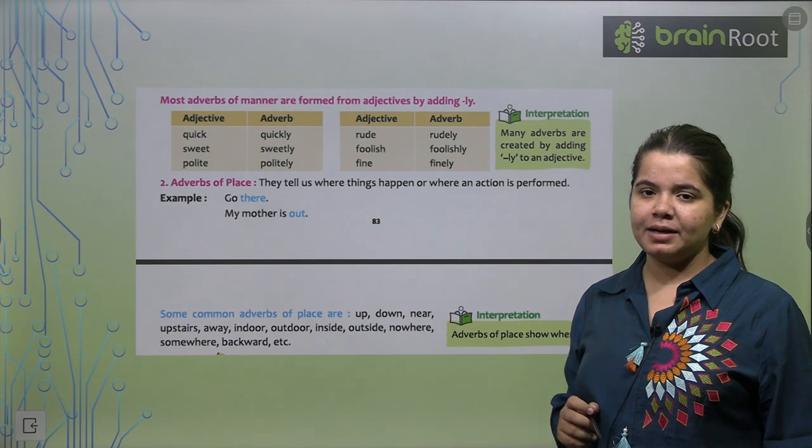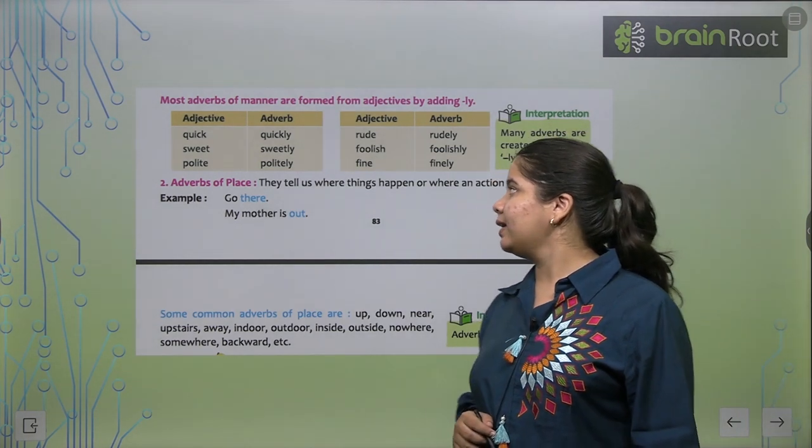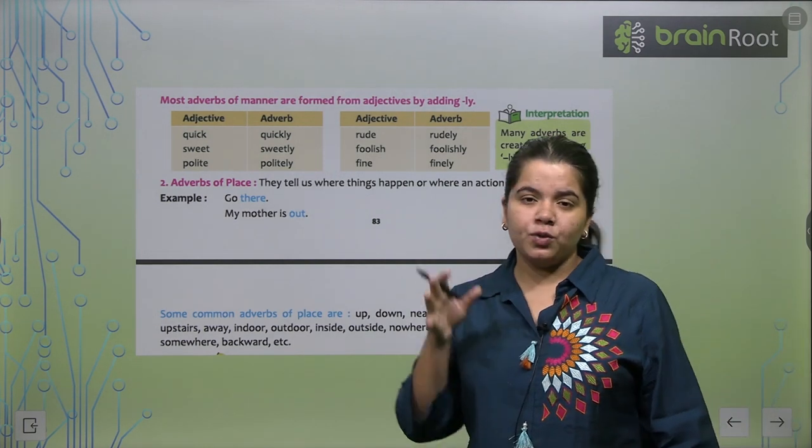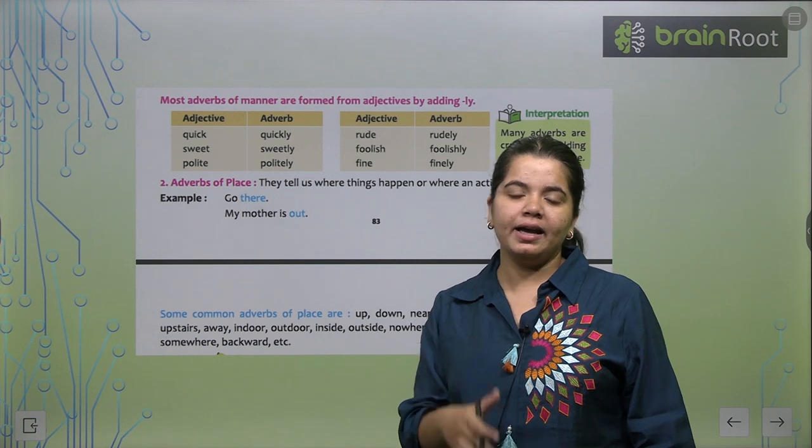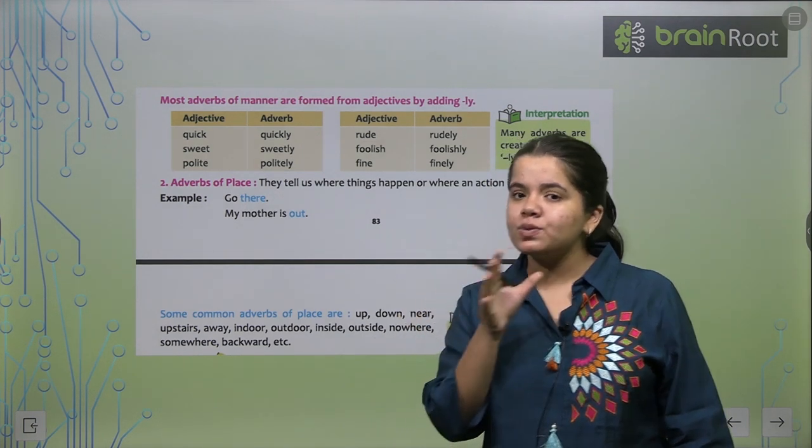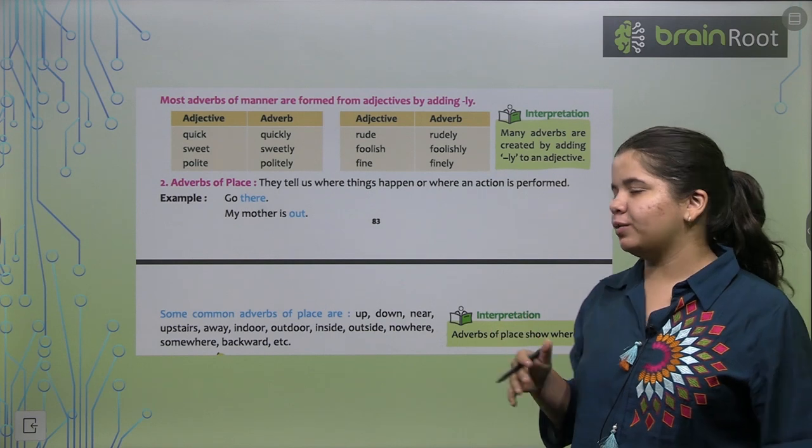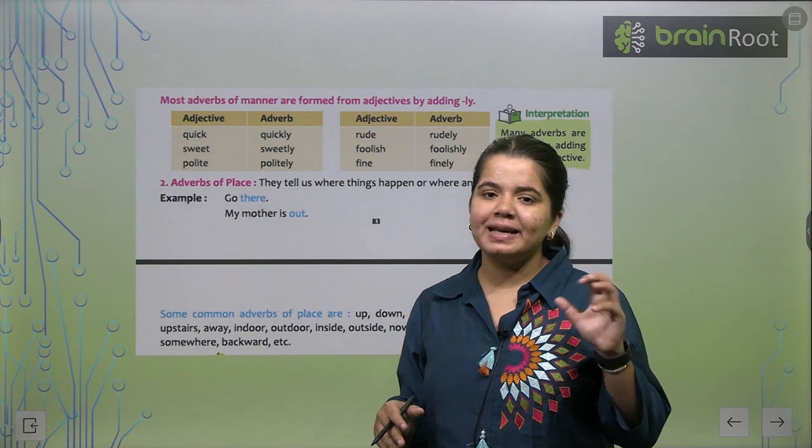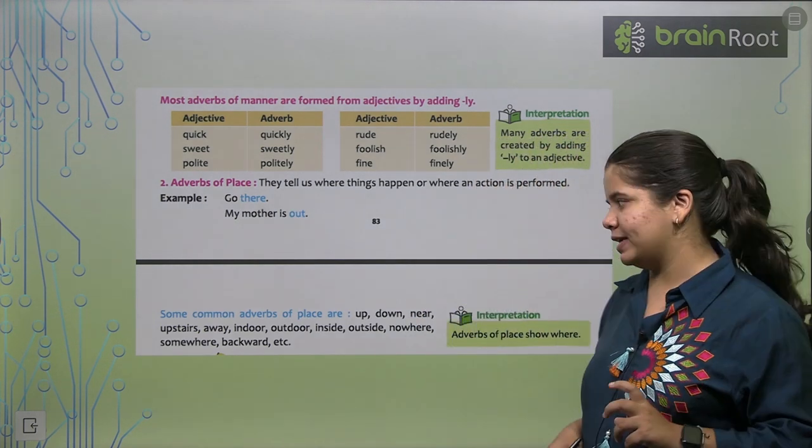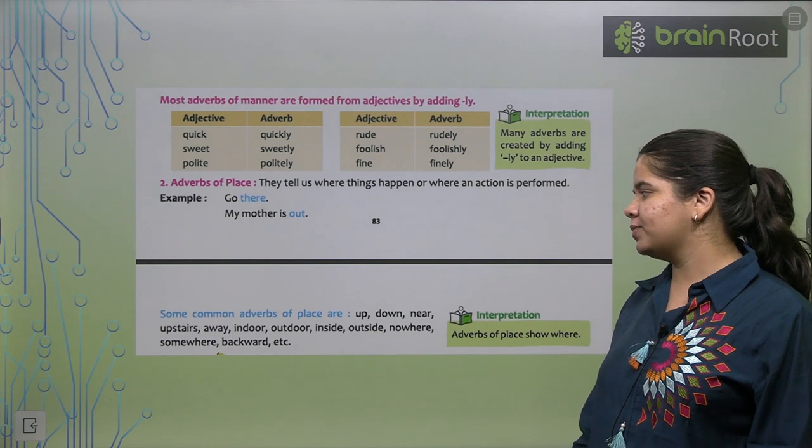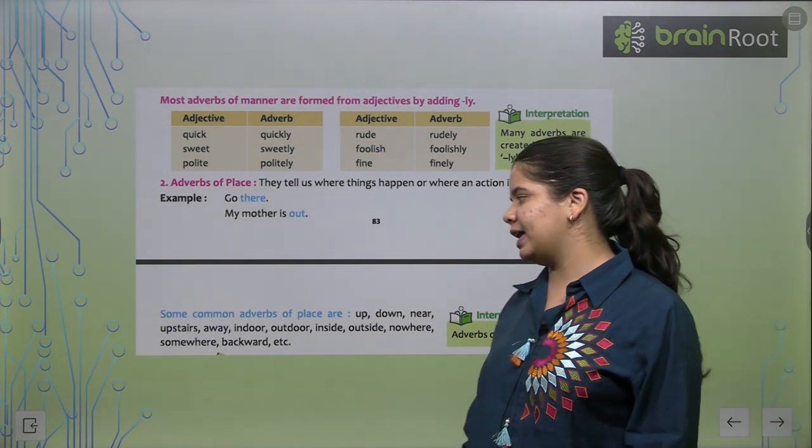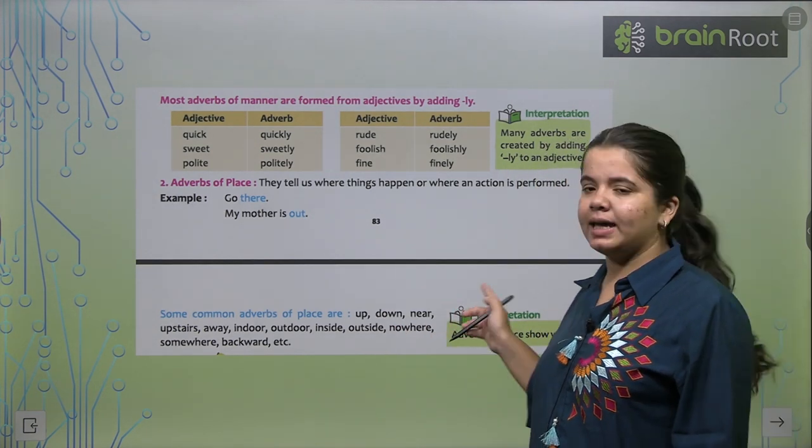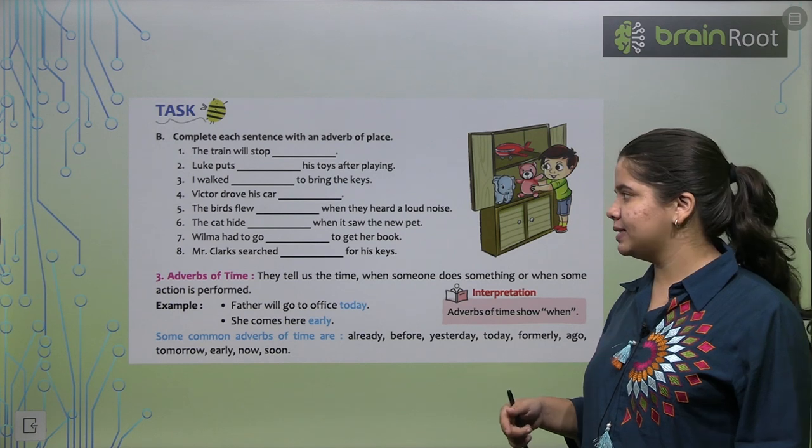So next what we have is adverb of place. They tell us where the things happen or where an action is performed. In which place that particular action is performed, when we know that word, what do we say? Adverb of place. Just say, go there, my mother is out. So we have adverb of place. Some common adverbs of place are up, down, near, upstairs, away, indoor, outdoor, inside, outside, nowhere, somewhere, backward, etc. So here are some examples.